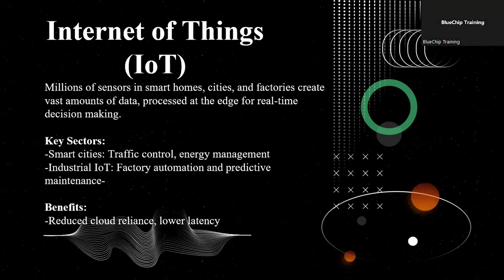Edge Computing is essential for IoT applications where millions of sensors collect data in real-time. In smart cities, for example, edge devices manage traffic by adjusting signals instantly based on current conditions. In industrial IoT, factories use edge devices for predictive maintenance, which analyzes machinery data and predicts when maintenance is required, reducing downtime.